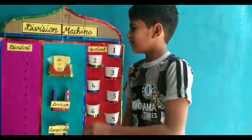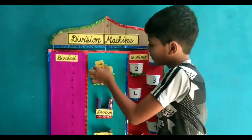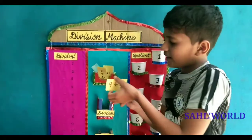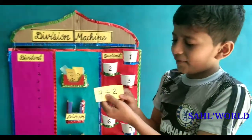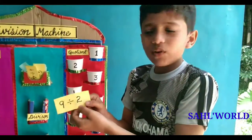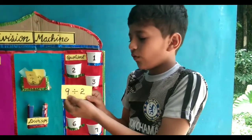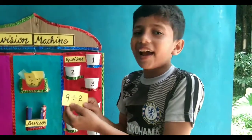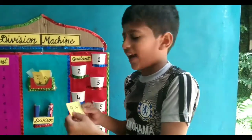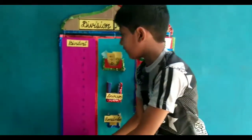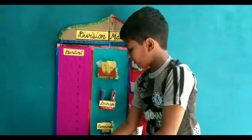9 divided by 2. 9 is the dividend, so we need 9 ice cream sticks and put into the dividend column.